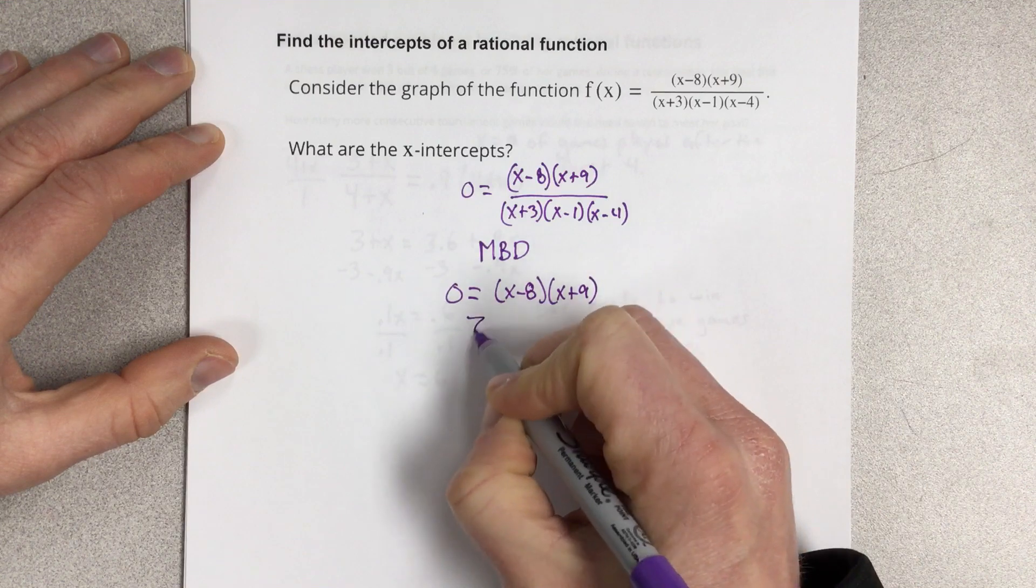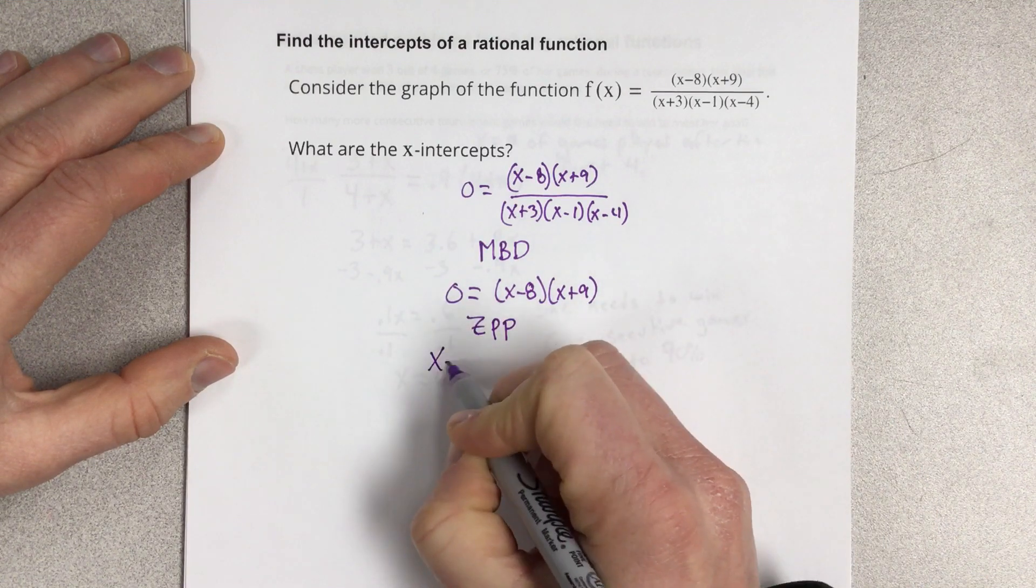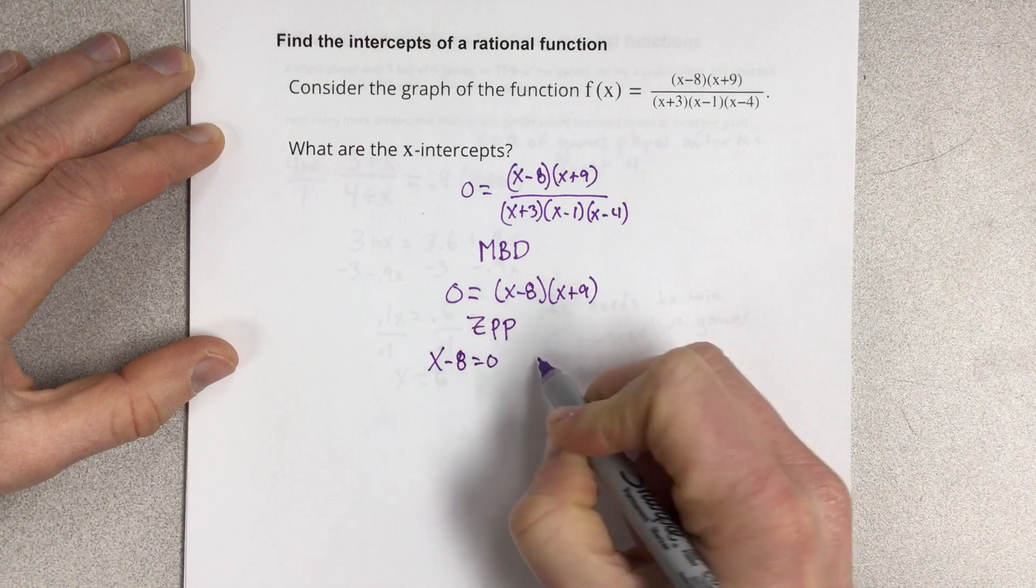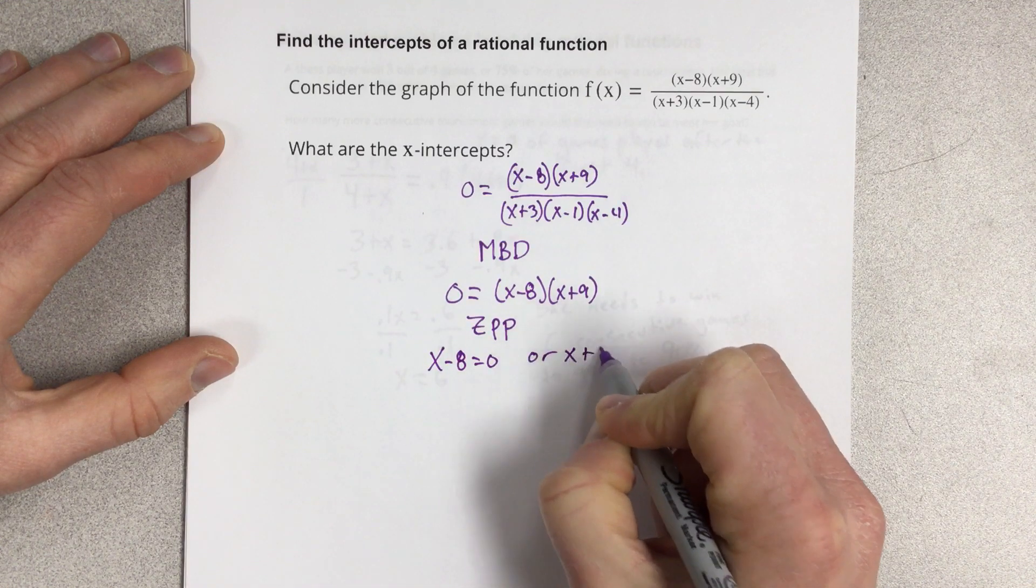We're going to use the zero product property. So that would be x - 8 equal to 0 or x + 9 equal to 0.